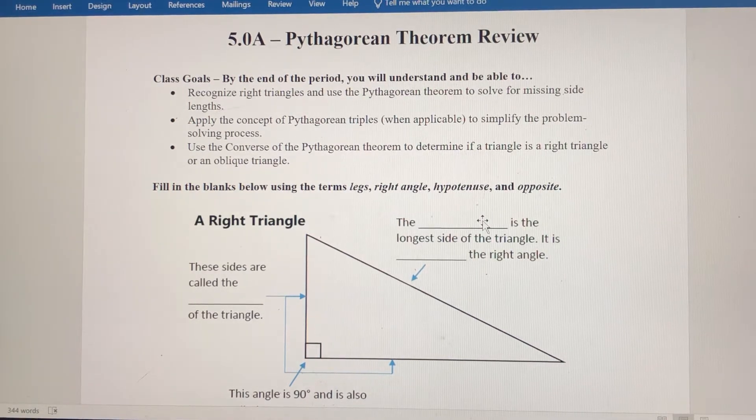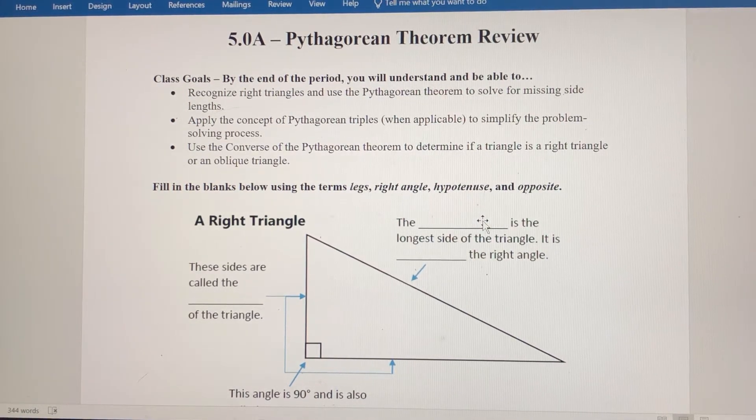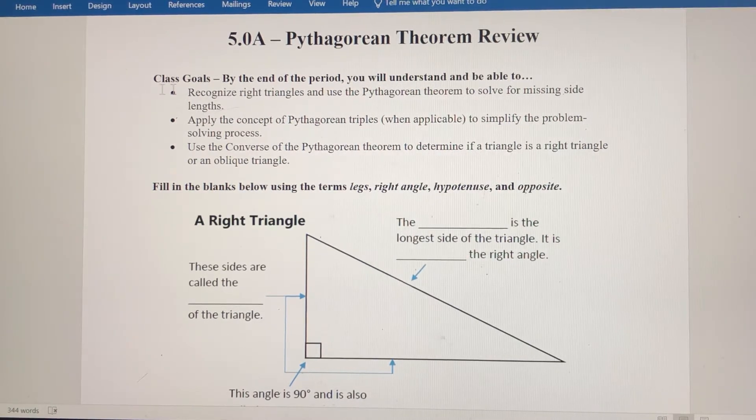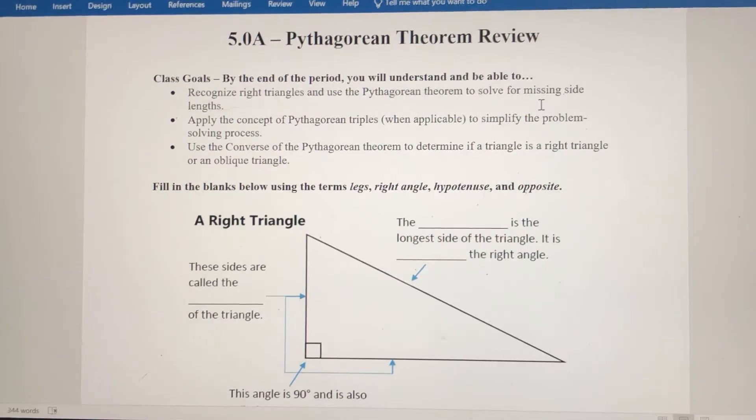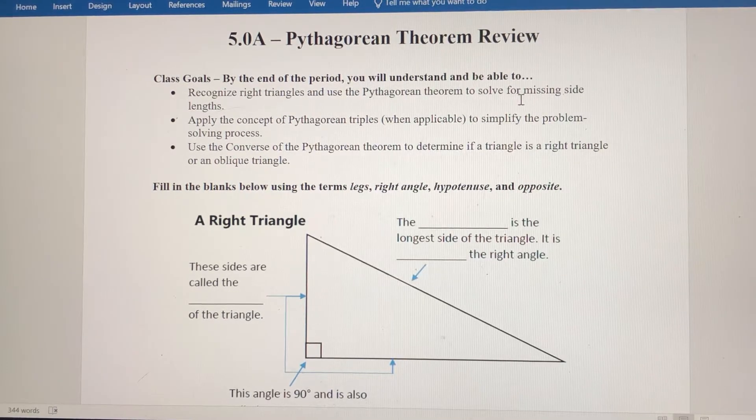All right, so as we start this trigonometry unit, I always like to revisit the Pythagorean theorem, and later on we'll revisit operations with radicals and roots. So we're here, we're going to start with Pythagorean theorem. We want to recognize right triangles and use the Pythagorean theorem to solve for missing side lengths. That's what we're going to go over in this video.